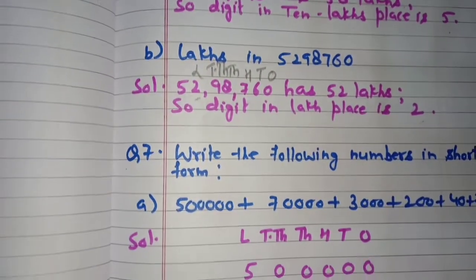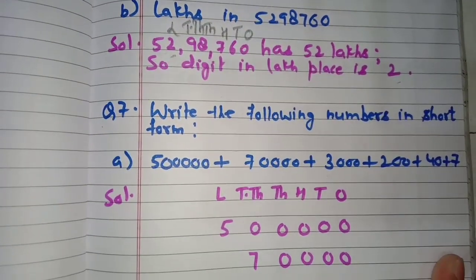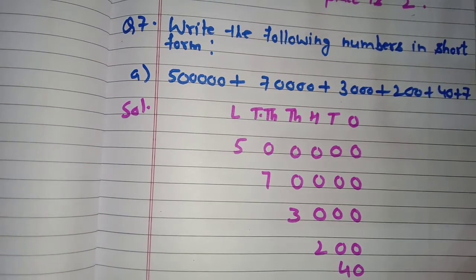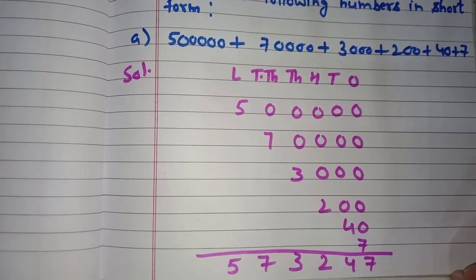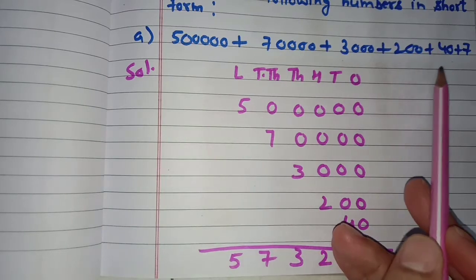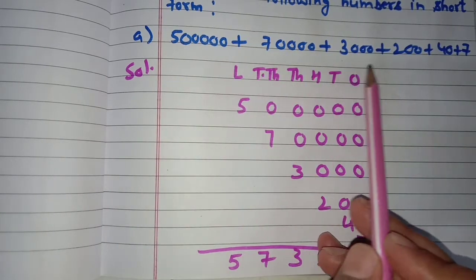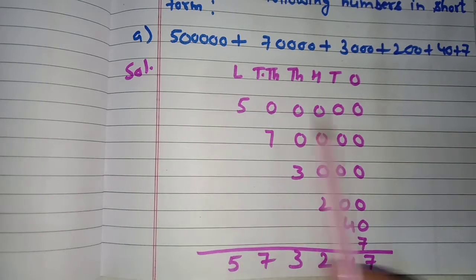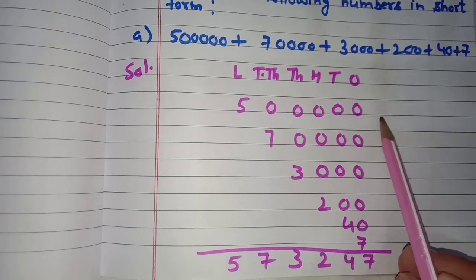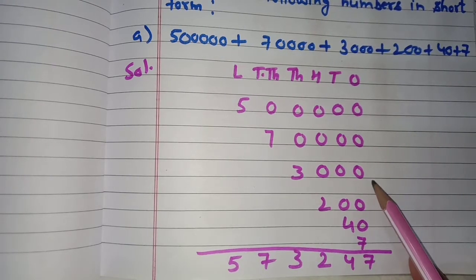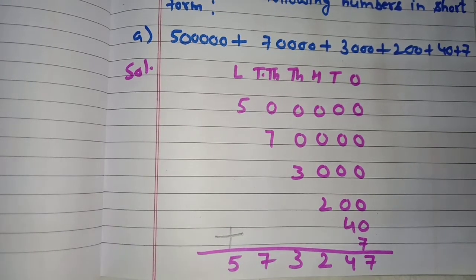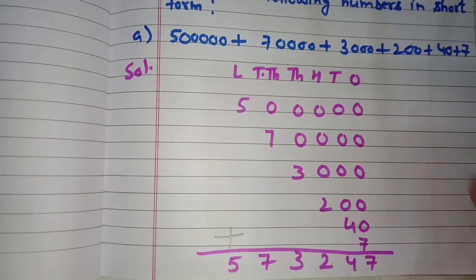Question number seven: write the following numbers in short form. The expanded form is given; we need to add all the place values to find the short form. Part A: 5,00,000 + 70,000 + 3,000 + 200 + 40 + 7. Adding all gives: five lakh, seventy-three thousand, two hundred and forty-seven.